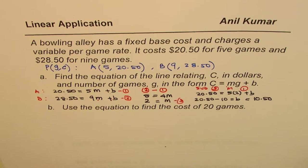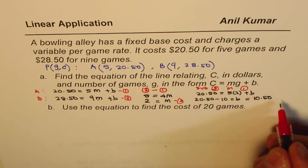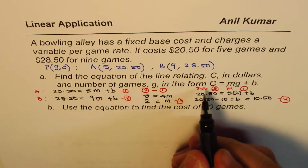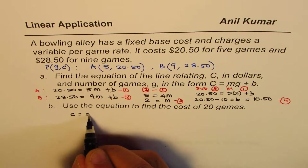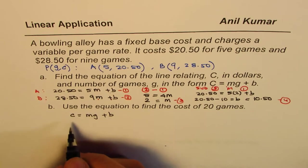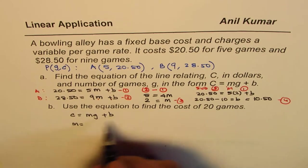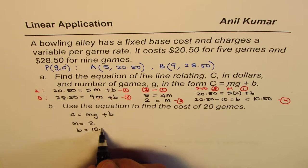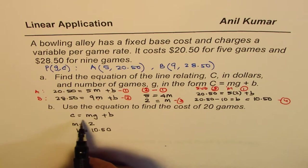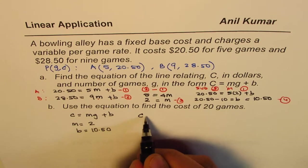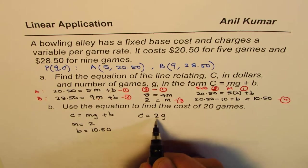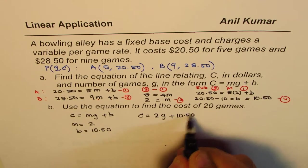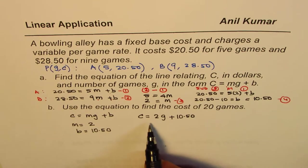So, what we have got here is M and B. Let me call this as equation 4. Let me summarize what all we have. We started with this equation, C equals to Mg plus B, and we found that M equals 2, and B equals 10.50. So, based on this, we can now write down our equation, which is the cost equals 2 times the number of games played, plus a fixed cost of $10.50. Do you see that? So, that is how you can read the cost.